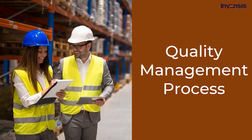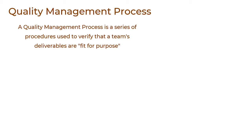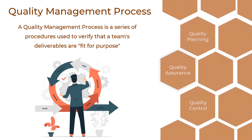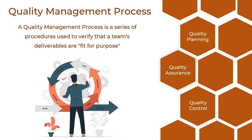Now let us take a tour into quality management process. A quality management process is a series of procedures used to verify that a team's deliverables are fit for purpose. It is an important procedure in every business since it ensures that the deliverables provided truly fulfill the consumer's needs. This quality management process will assist you in immediately improving the quality of your deliveries. According to PMBOK, the three basic phases of project quality management are quality planning, quality assurance, and quality control. These three phases have respective inputs, tools and techniques, and outputs.